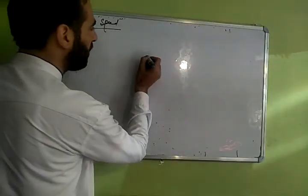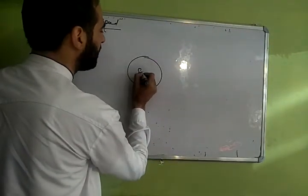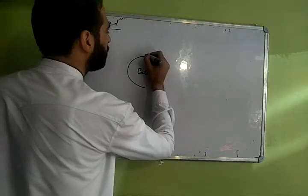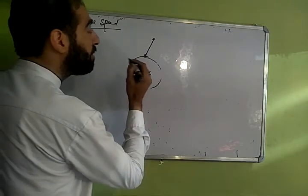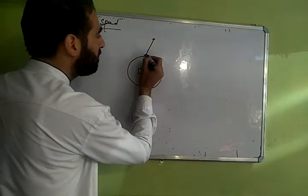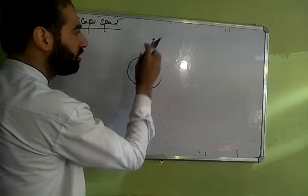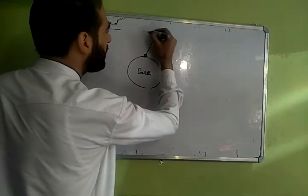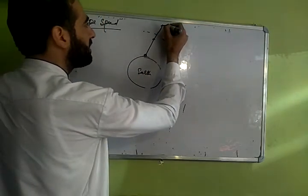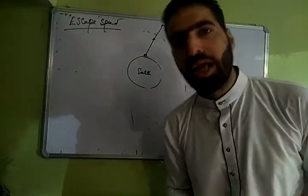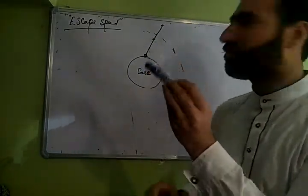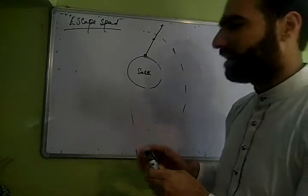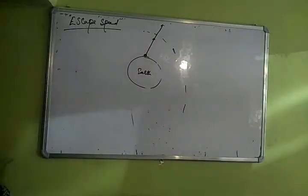So, the first escape speed, you know, suppose you have any planet like Earth and suppose you are imparting certain energy to the object and the minimum kinetic energy or the minimum speed required for this object so that it would escape the Earth's gravitational field is known as escape speed.